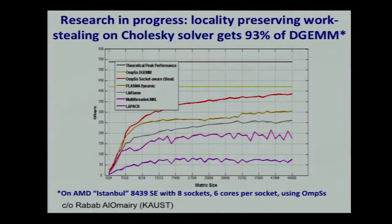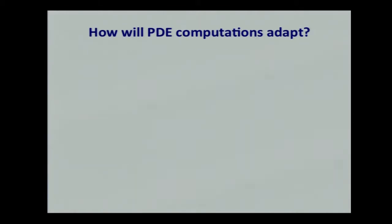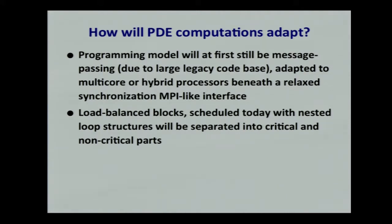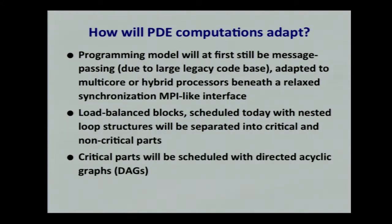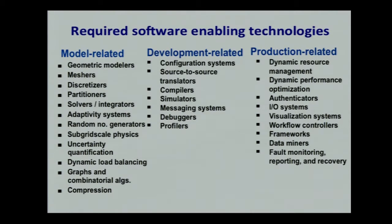Here's an example of work stealing within NUMA — you don't want to steal globally because that's too energy expensive, but you want to fill up starved threads with extra work within local memory. Some work by one of my Saudi women grad students in association with the Barcelona Supercomputer Center. We're also interested in multi-physics apps where PDEs and molecular dynamics are co-hosted: the PDE solution scales very well on Shaheen whereas the MD solution tails off. The programming models will at first be message passing because of legacy, but must be stretched to MPI-3 with less synchrony. Load balance blocks should be separated into critical and non-critical parts — the critical scheduled with DAGs and the non-critical made available for work stealing.